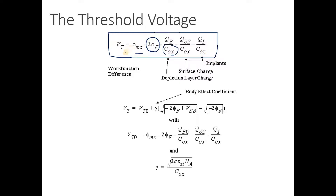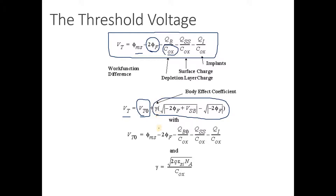Your threshold voltage is basically a function of VT0, where VT0 is the threshold voltage when nothing is applied at the body terminal. We know there are four terminals: drain, gate, source, and body. If nothing is applied on the body, in the case of NMOS the body is at zero, and in PMOS the body is at VDD, the same potential as the source.